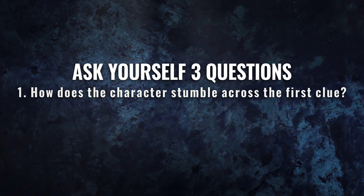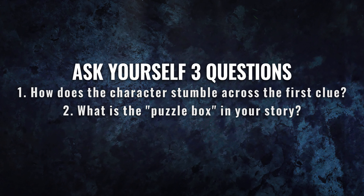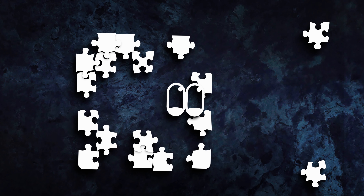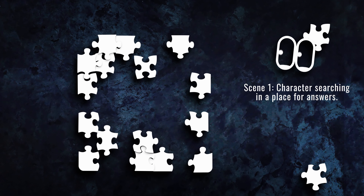There are three questions you can ask yourself: How does the character stumble across the first piece — what were they doing? What is the puzzle box in your story? And where does your character begin searching for the rest of the clues once they realize they're not going to find any in the obvious place? As they find piece after piece, that picture becomes clearer. Every time they find a piece, they theorize what that picture could be.